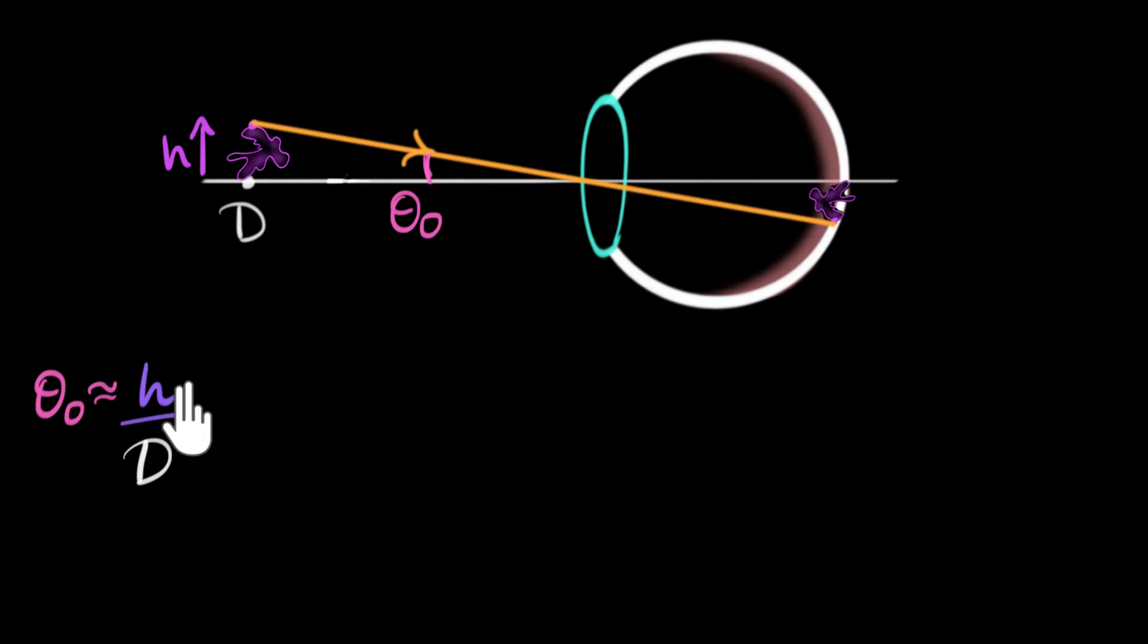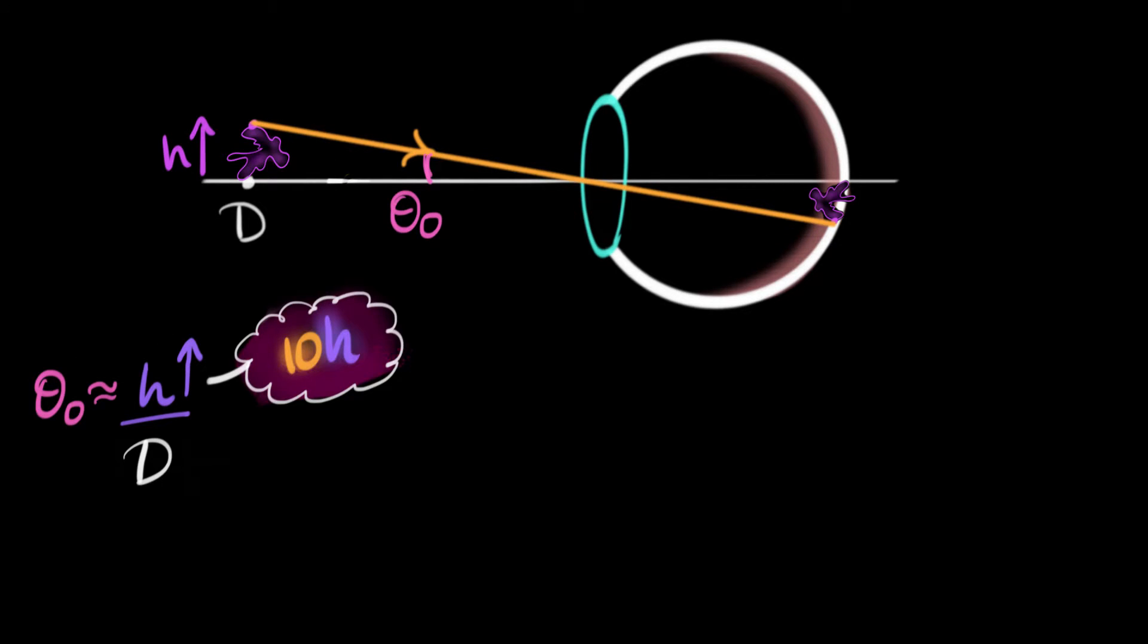One, we can somehow increase the height of the amoeba itself. If you could somehow stretch that amoeba and make it, say, 10 times bigger, then I'm pretty sure you agree with me that even this angle would become 10 times bigger, making this size in the retina also 10 times bigger. Another thing we could do is decrease this value of d, which means if you could go closer, then also theta naught would increase.